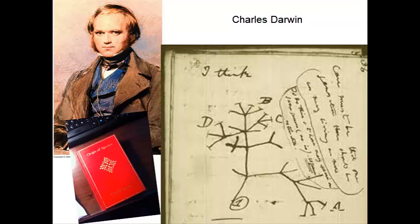The figure here is my copy of The Origin of Species, but the scribblings that you see with the 'I think' at the top comes right out of Darwin's personal journals, where he thinks there is a common ancestor, and then from that organism led to all the diversity of life.